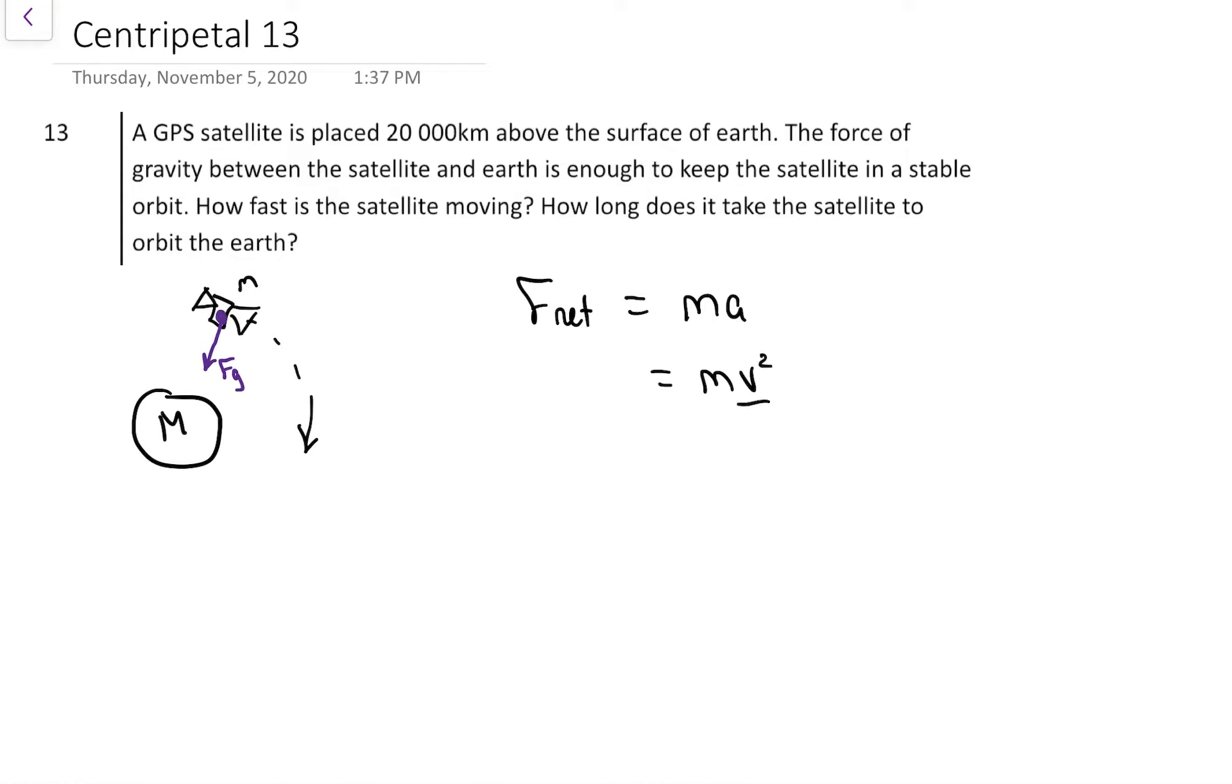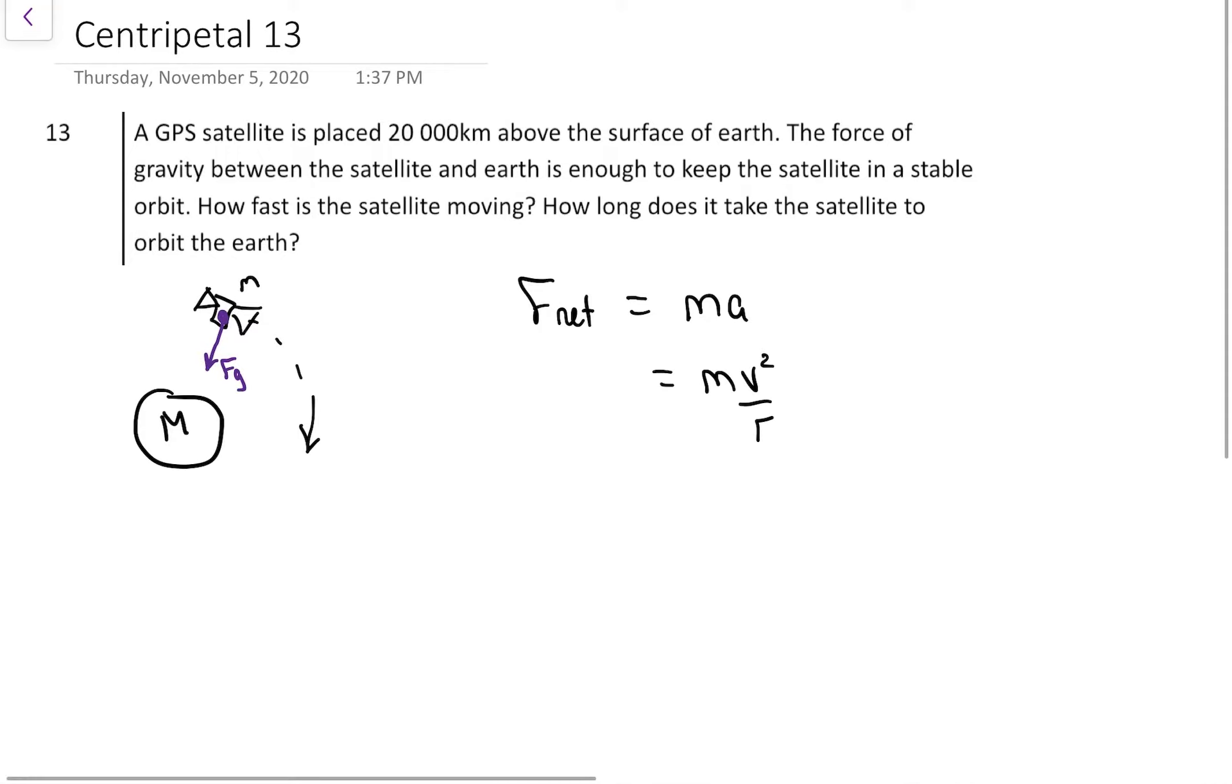The A is going to turn into V squared over R. In this case, there's only one force, the force of gravity. It's been a while, but Newton's gravity is GMM over R squared.